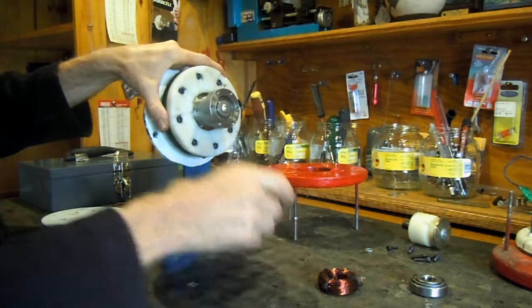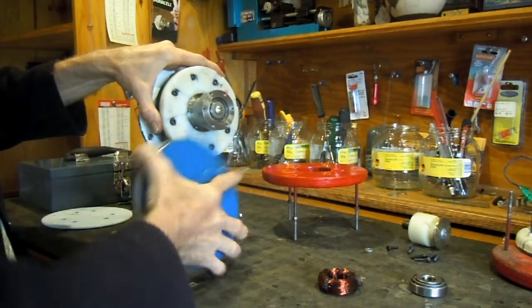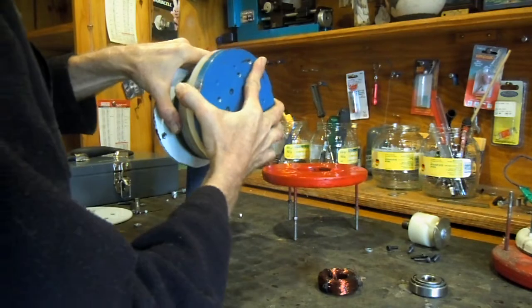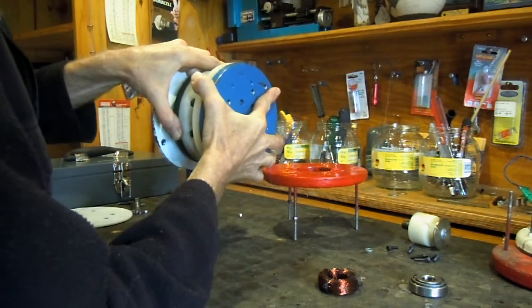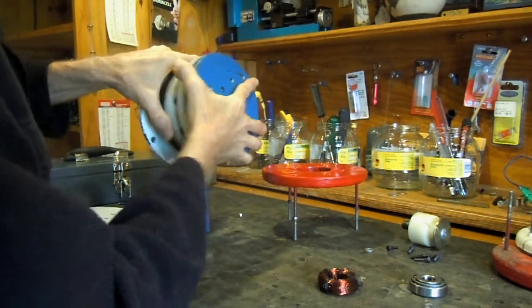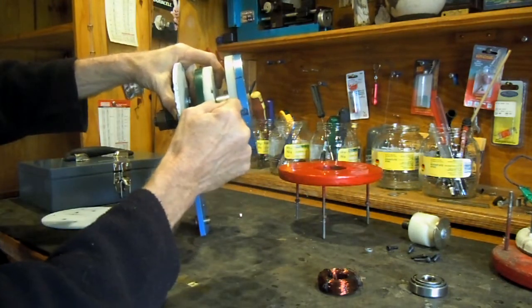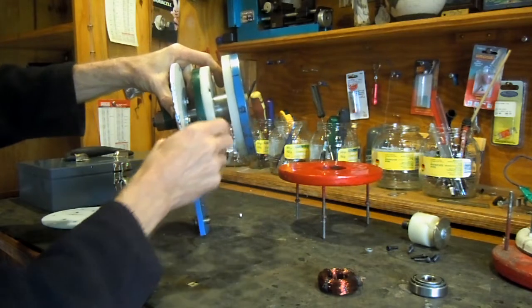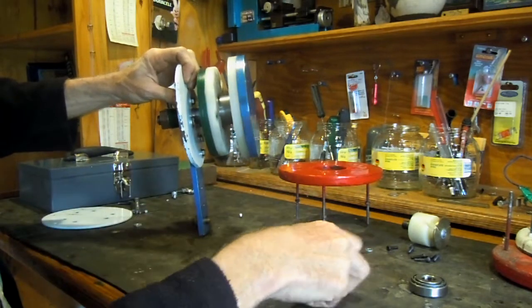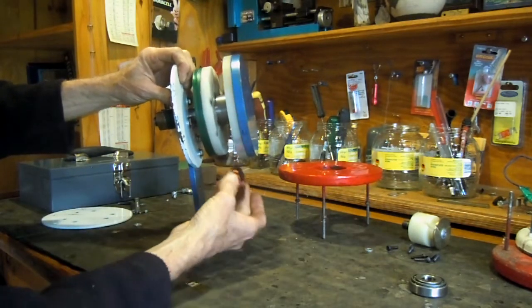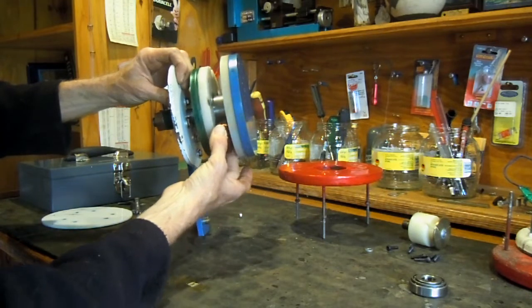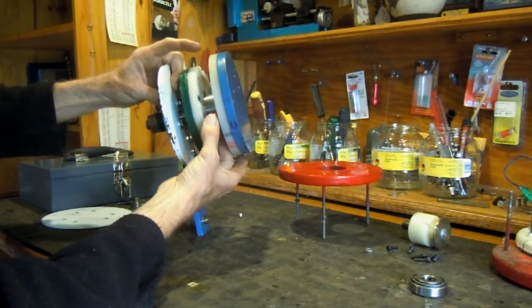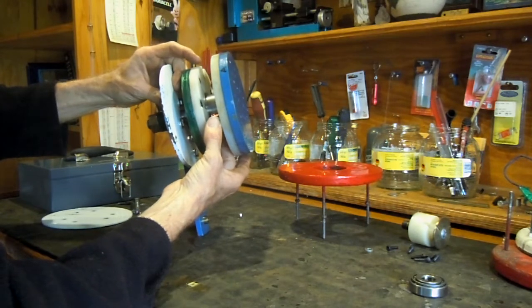So basically what we have here is two sets of magnets attracting each other—north and south opposing each other, so north, south, north, south. And then in between these two discs we've got the six copper coils like that. When this turns, it sets up this alternating current.